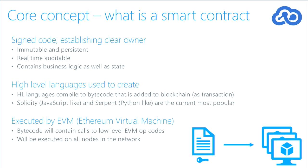From a core concept perspective, what is a smart contract? A couple things make it up. First, it's signed code — we're establishing a clear owner. It's immutable and persistent, meaning that once we sign it and put it as a transaction on the blockchain, it will live there forever and it can't be deleted or pulled back out. What happens if you have a smart contract that you decide you no longer want?